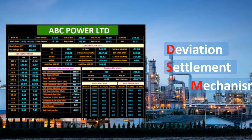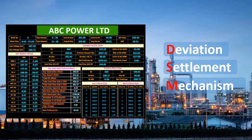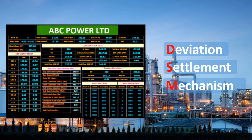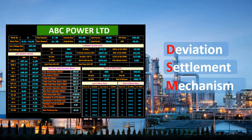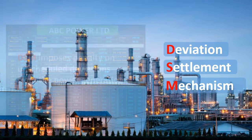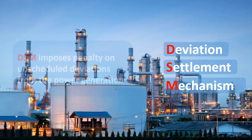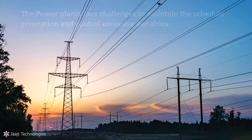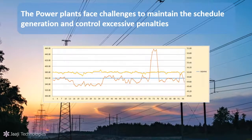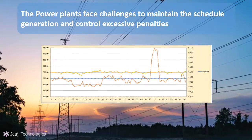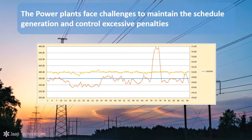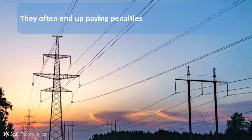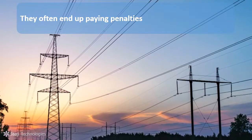The government introduced a deviation settlement mechanism, DSM, which is a regulatory mechanism targeted mainly at grid stability. DSM imposes a penalty on unscheduled deviations from power generation. Power plants face challenges to maintain scheduled generation and control excessive penalties as grid frequency changes from time to time. They often end up paying penalties and miss the opportunity to gain incentives.